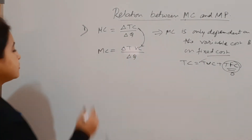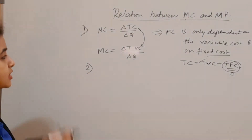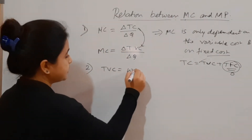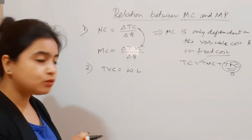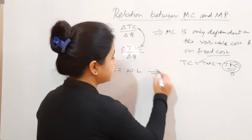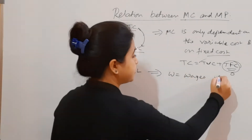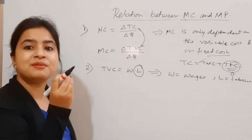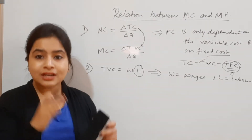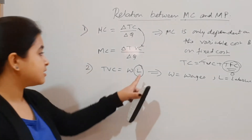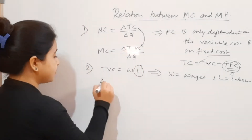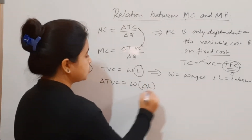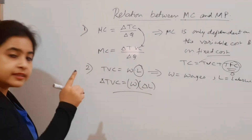The second thing to remember: TVC = W × L, where W is the wages given to labor and L is the labor input. L is our variable factor because wages cannot change — only the variable factor L can change. Therefore, delta TVC = W × ΔL.